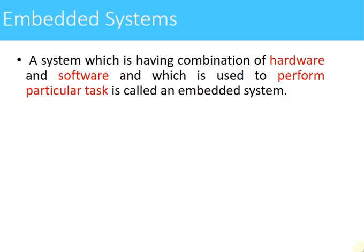So what is an embedded system? A system which has a combination of hardware and software and which is used to perform a particular task is called an embedded system. Any electronic system which has hardware and some software installed on that hardware, and which is used for performing a particular task, can be called an embedded system. For example, a calculator or a set-top box can be an example of an embedded system. A calculator has hardware and software installed on it which performs a particular job — arithmetic operations — and that is the only thing a calculator can do.